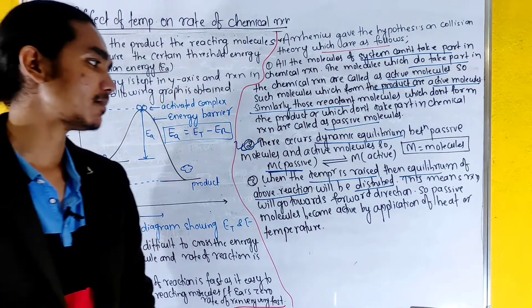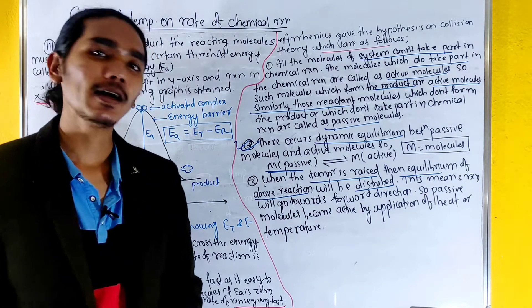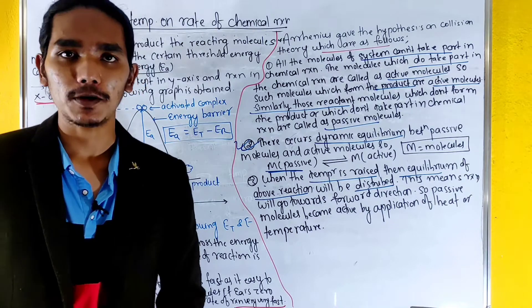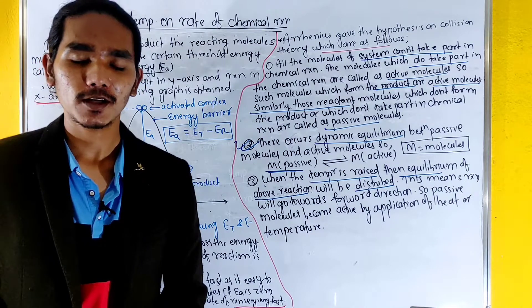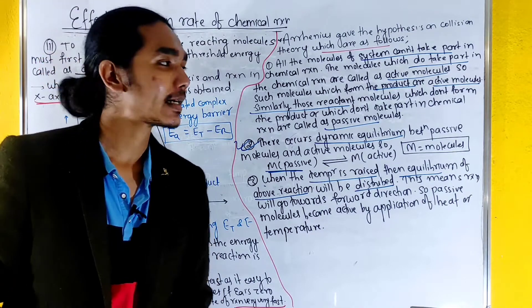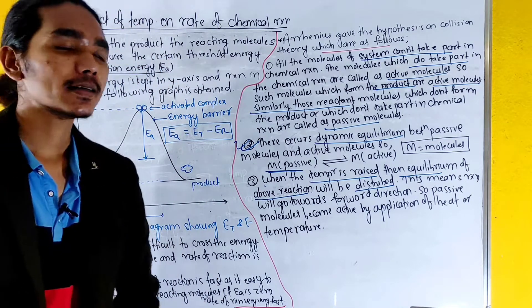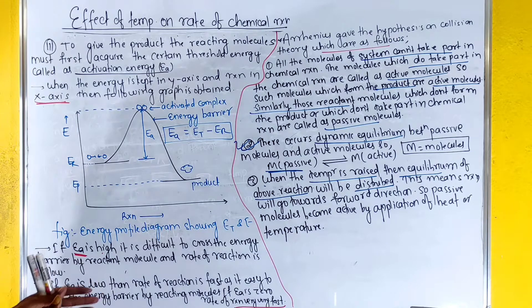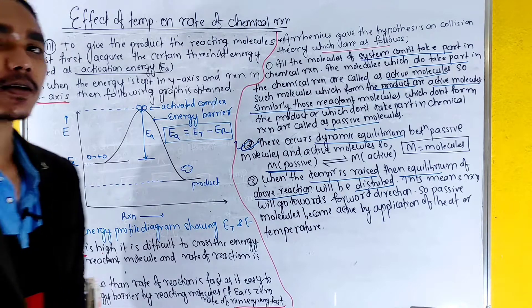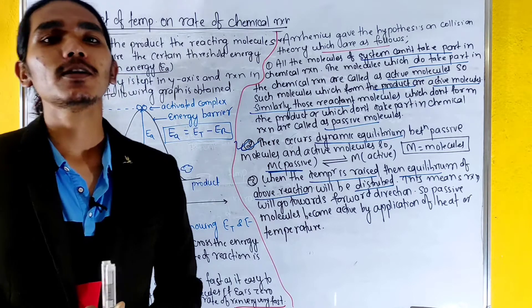Passive molecules become active by application of heat or increased temperature. So the effect of temperature on the rate of chemical reactions is explained through this mechanism.